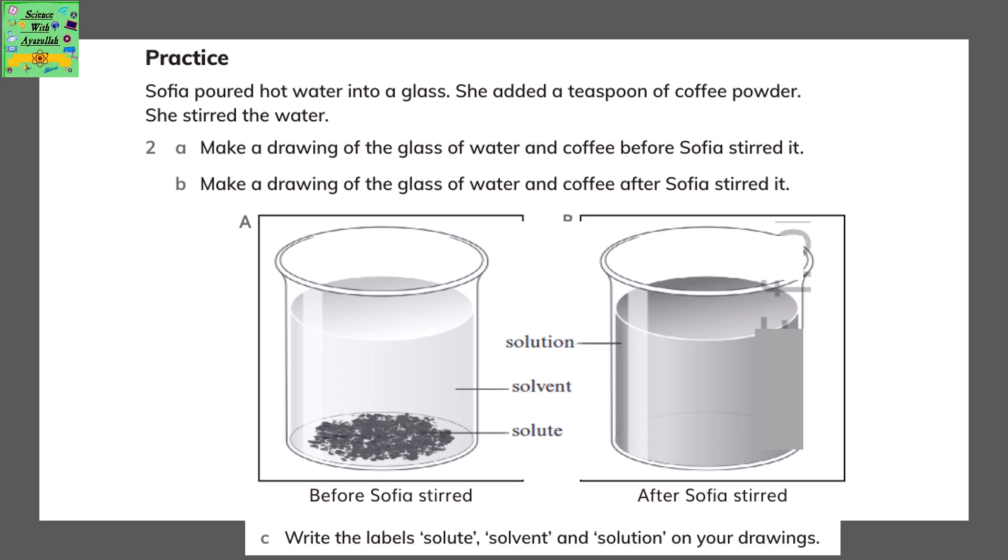The diagram A is before Sophia stirred the water and diagram B is after Sophia stirred the water. Write the label solute, solvent and solution on your drawings. It has been labeled.